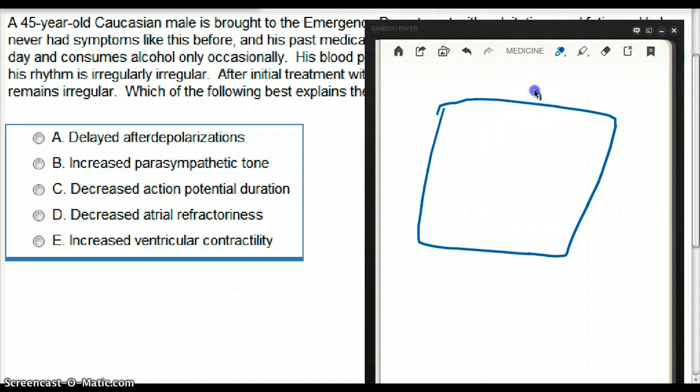Digoxin blocks the sodium-potassium ATPase directly. So this is going to be directly blocked by digoxin.